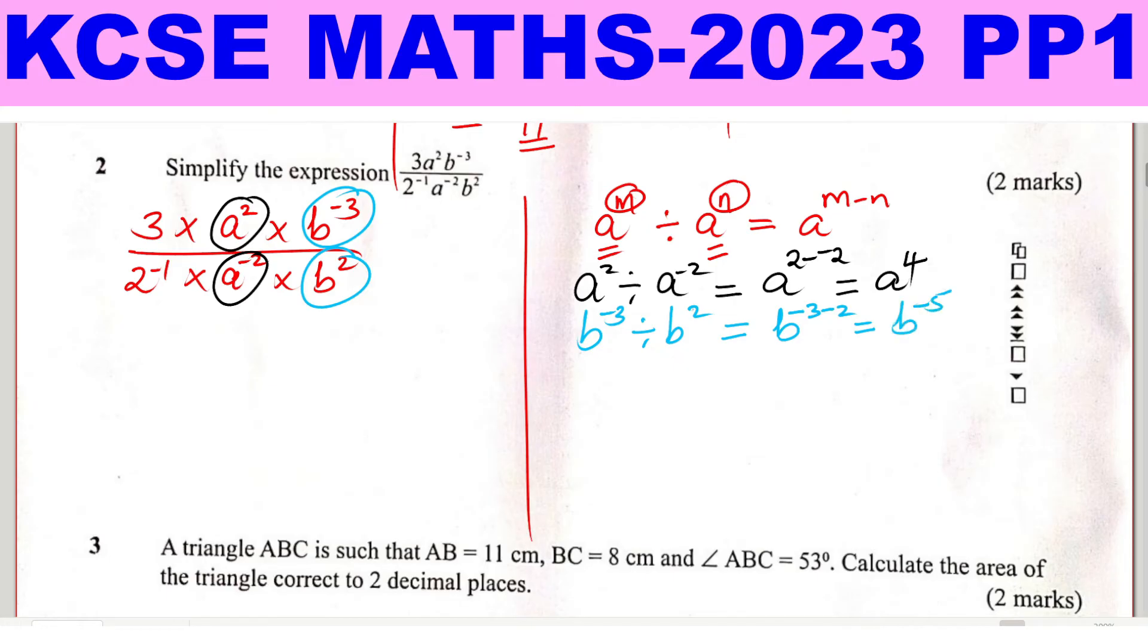Once you're through with that, now I can take 3 and 2 raised for negative 1. So 3 divided by 2 raised for negative 1 is the same as, read it here, 2 raised for negative 1 is the same as a half. So this one will give 3 times 2 divided by 1. This one will give 6.